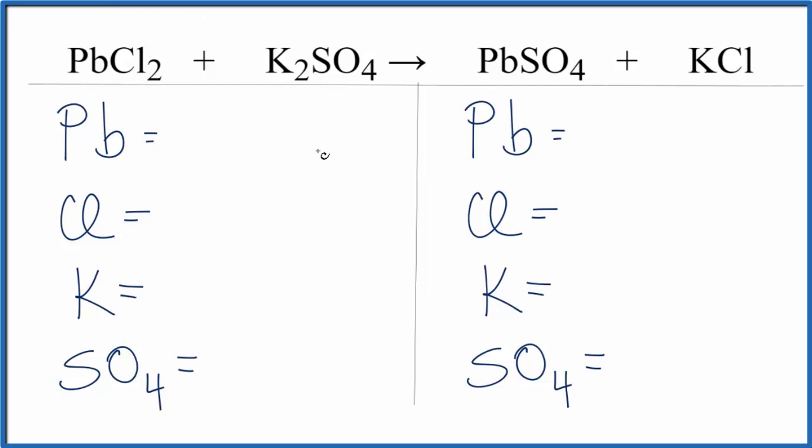So to balance the equation, let's start by adding the atoms up on each side. We have Pb1, chlorine, we have two of those, K potassium, we have two of those.